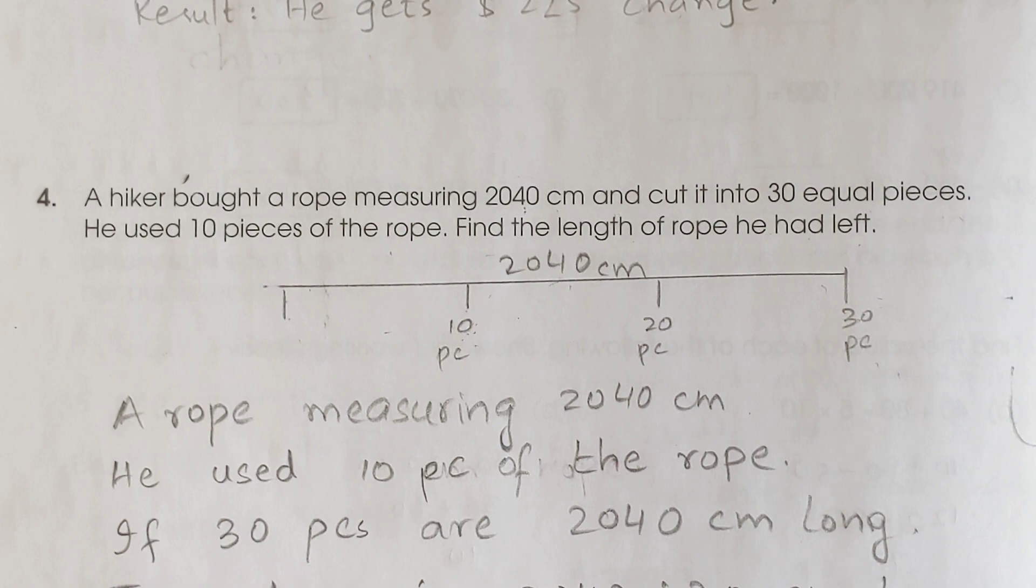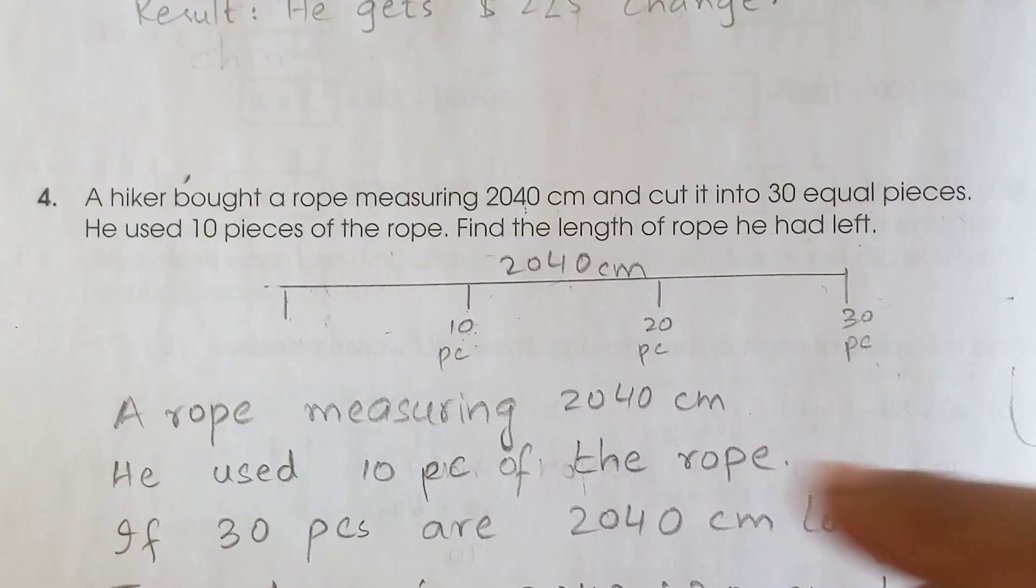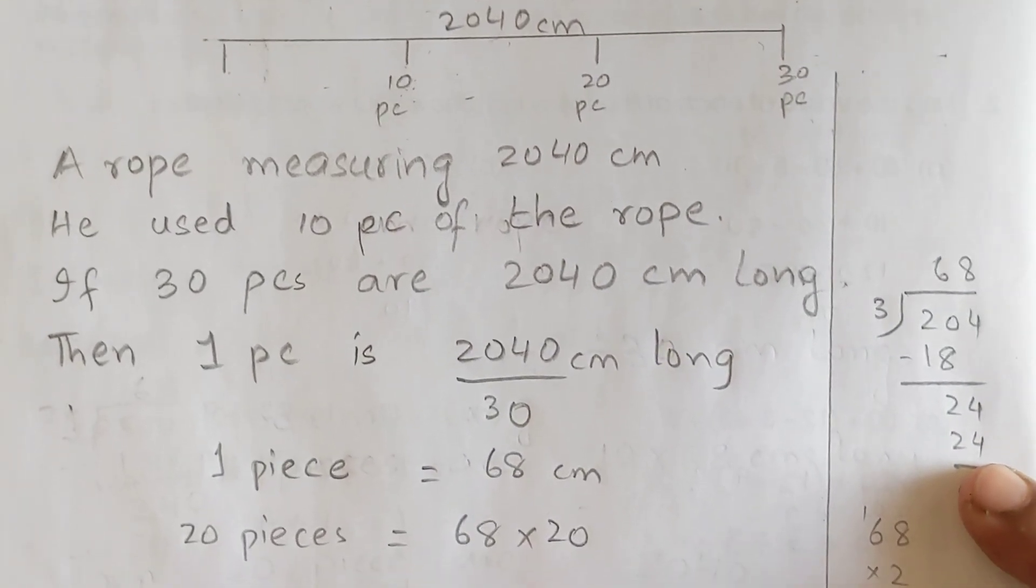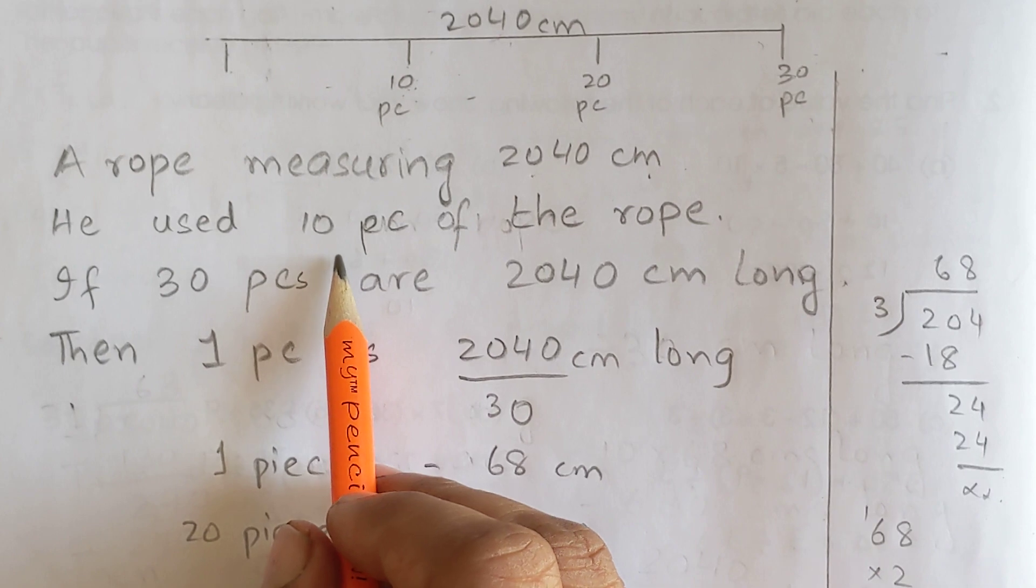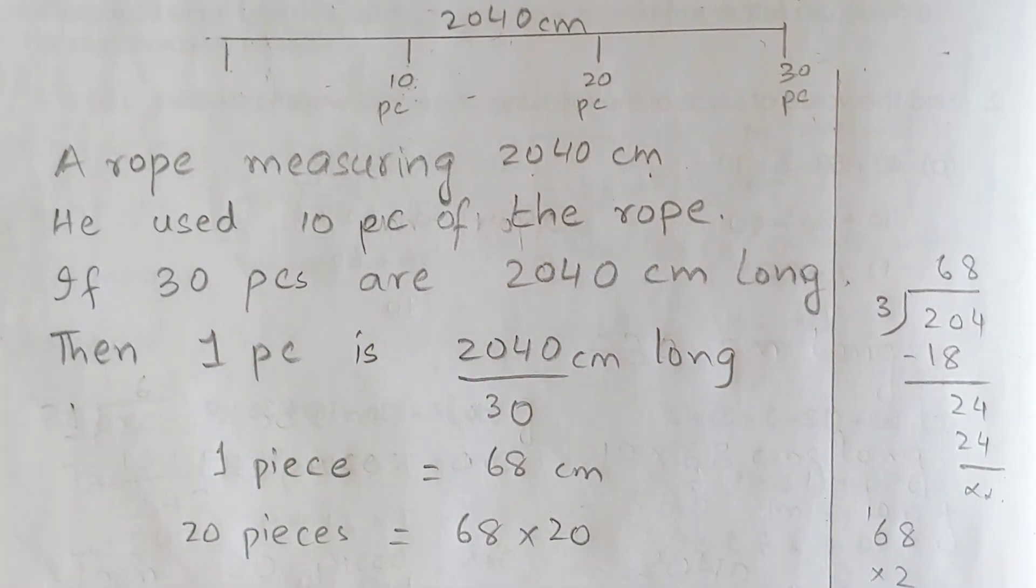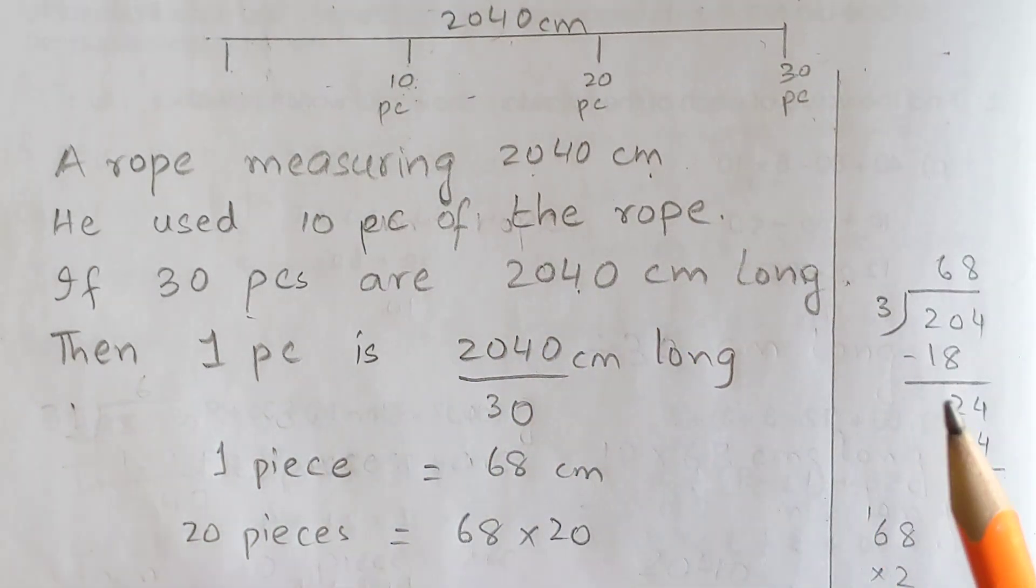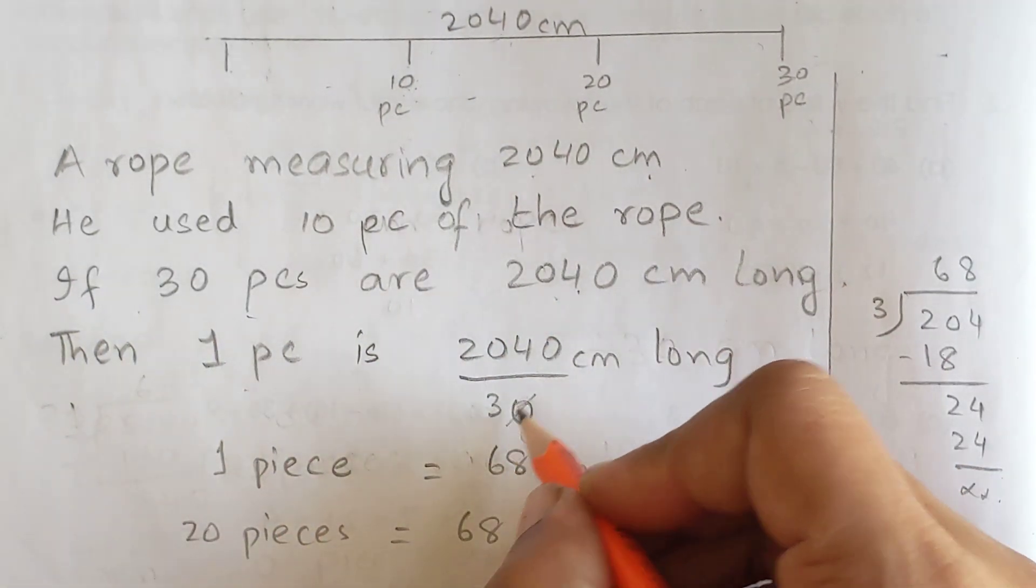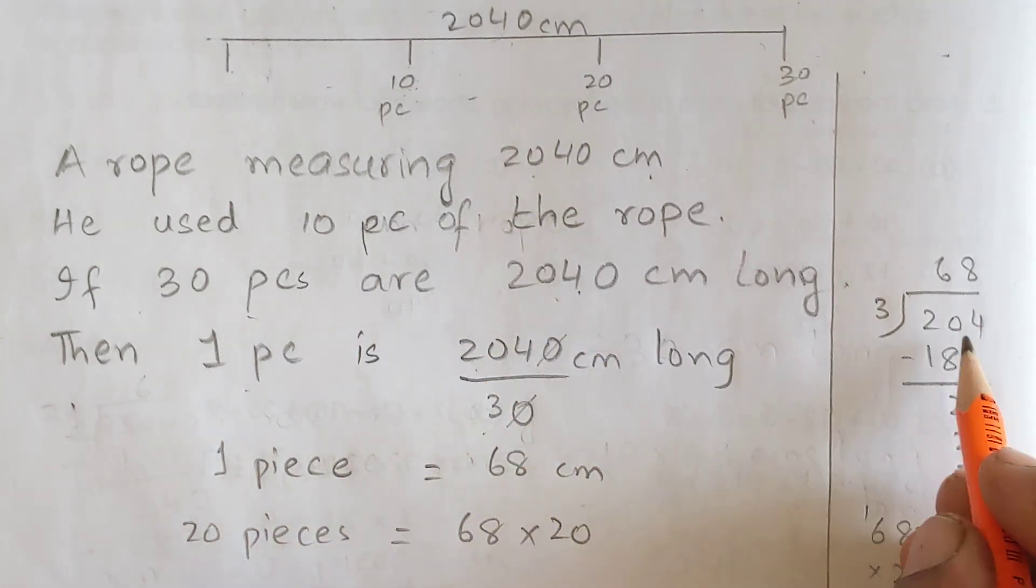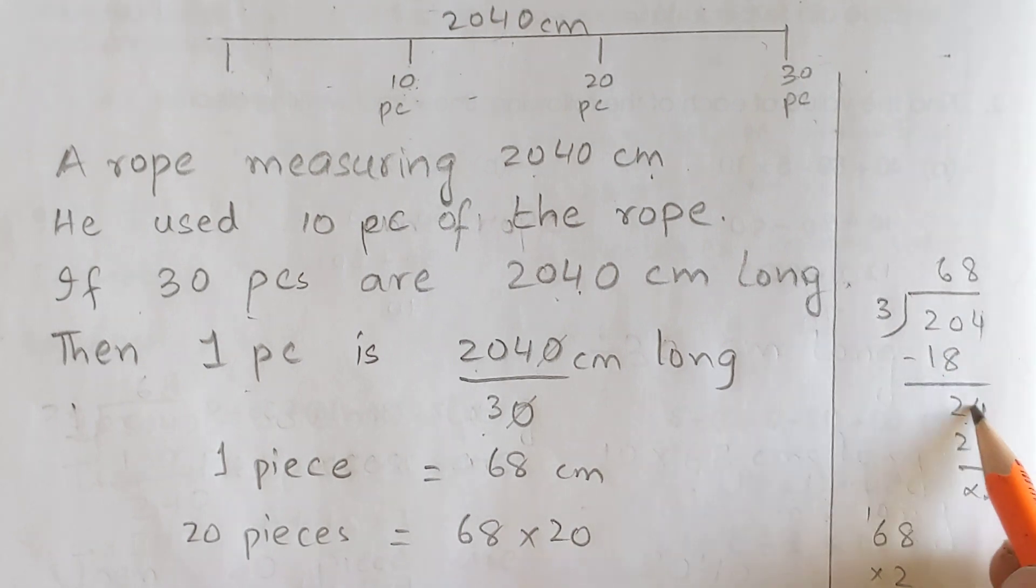First, we need to find the length of one piece. The total rope is 2040 cm divided into 30 pieces. If 30 pieces are 2040 cm long, and we need to know the length of 20 pieces, first we find one piece. Divide 2040 by 30. When we divide, what's the answer? That's 68. Three sixes are 18, subtract to get 2, bring down 4, three eights are 24. So one piece is 68 centimeters.